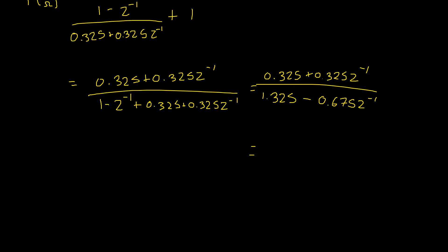That will give us 0.325 divided by 1.325 will give us 0.245 plus 0.245 z to the power of negative 1.